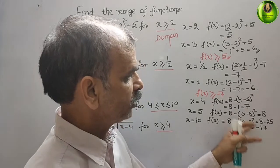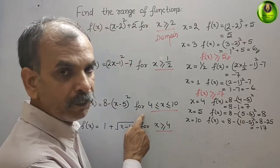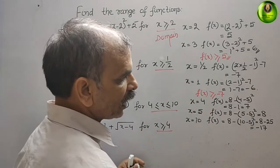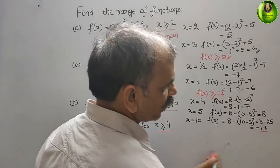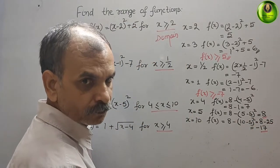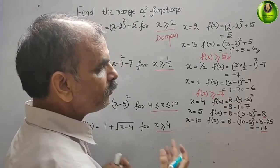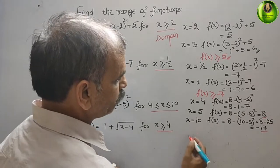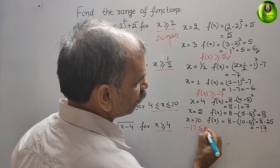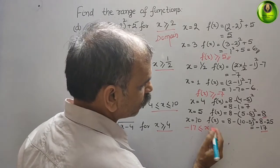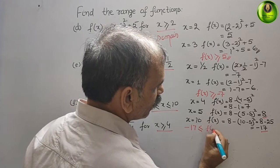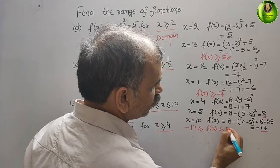You can see the minimum and maximum values. This is the minimum value and this is your maximum value. So we will write: -17 ≤ f(x) ≤ 8. This is your range.